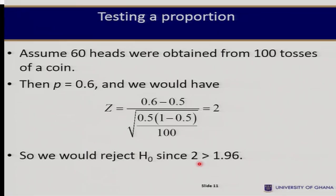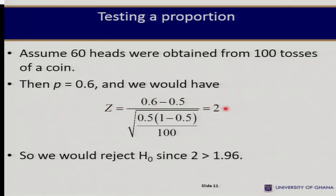In the experiment, tossing a coin 100 times, we observe heads 60 times. So our sample proportion is 0.6. We compute our Z test statistic and obtain 2. Since 2 is greater than 1.96, we reject the null and say that the coin is not a fair coin. If it were fair, we shouldn't be rejecting the null hypothesis.